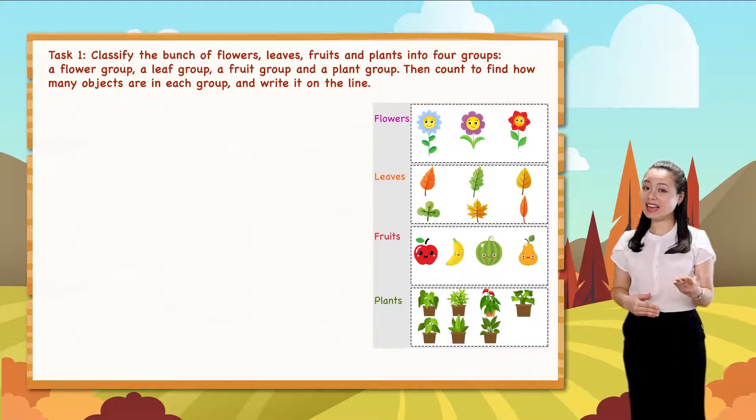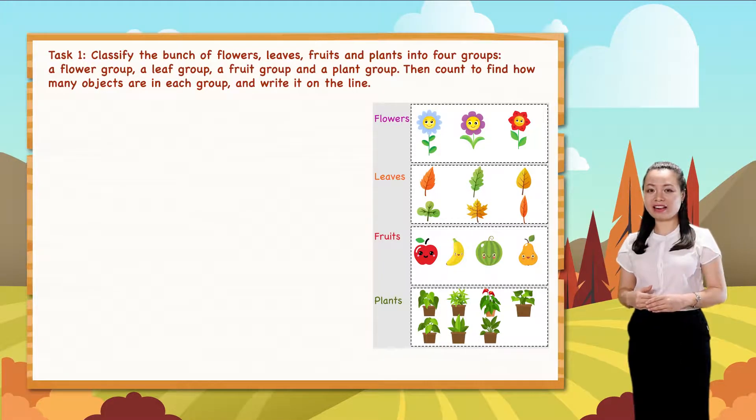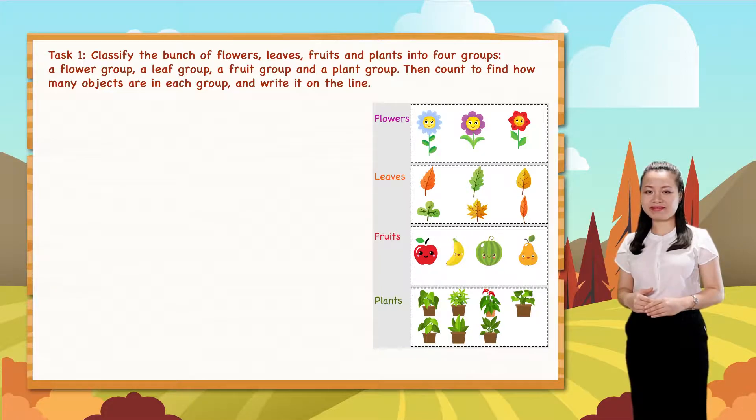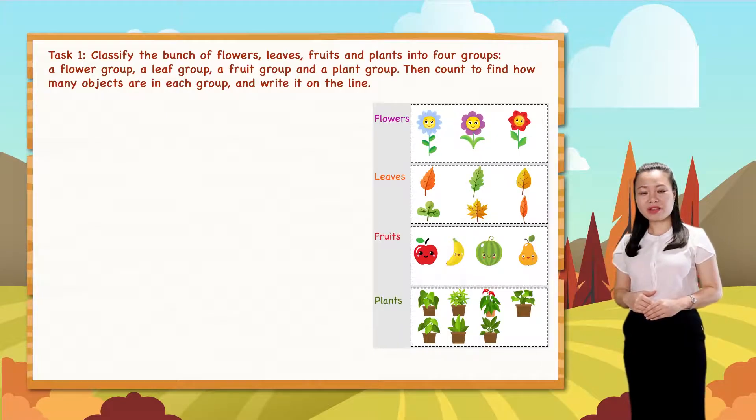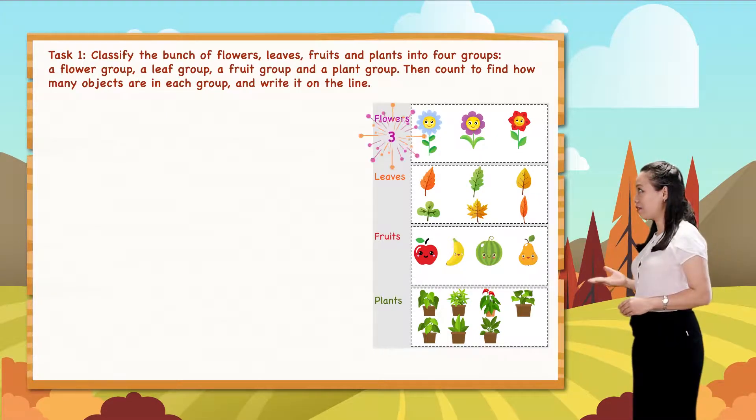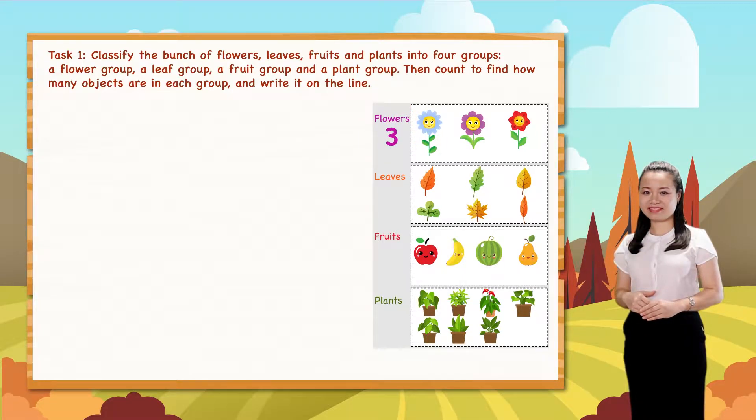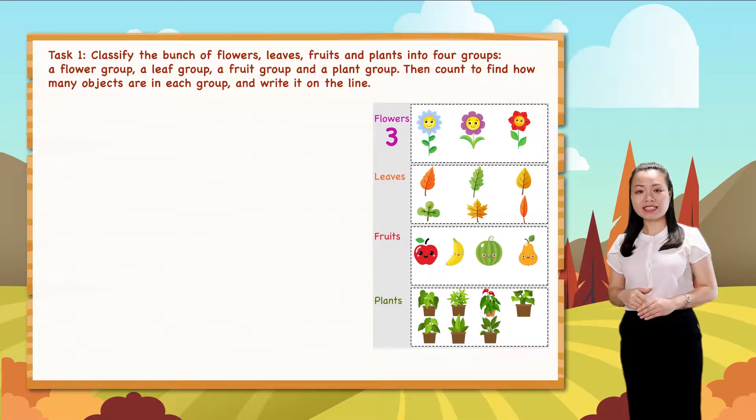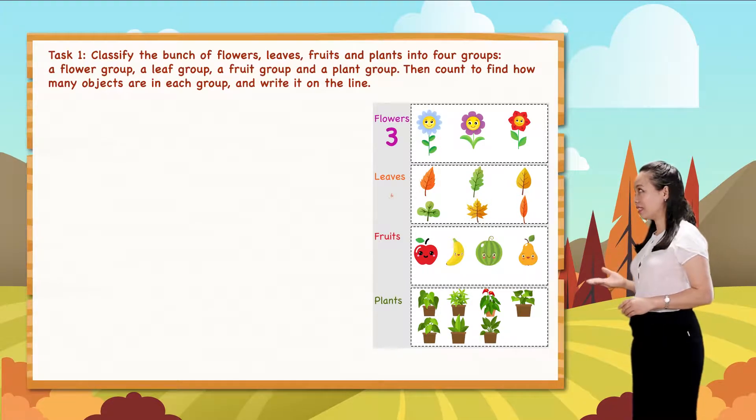Now, let's count to find how many objects are in each group. First, one, two, three. So, there are three flowers. Next, one, two, three, four, five, six. So, there are six leaves.